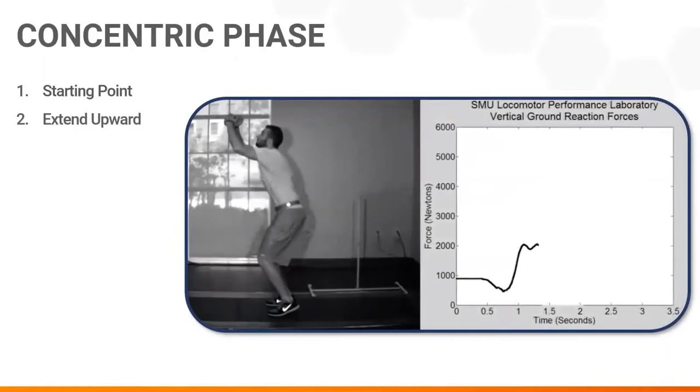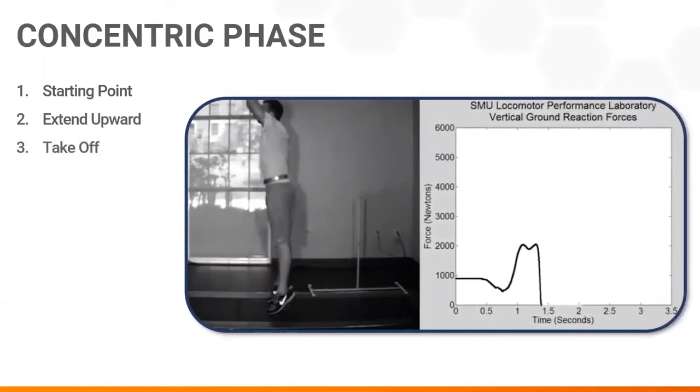The athlete only has until they leave the ground to generate force, and whatever they're able to produce will determine their jump height and power output.